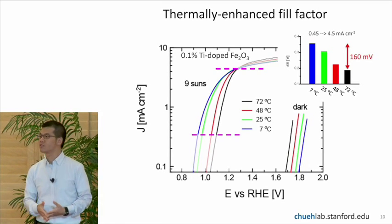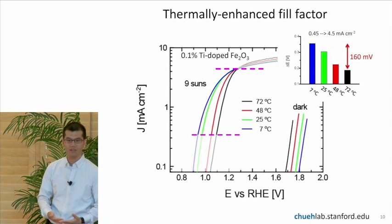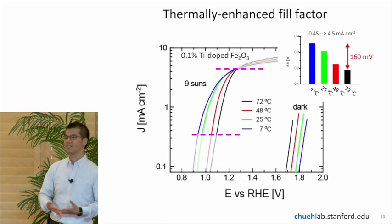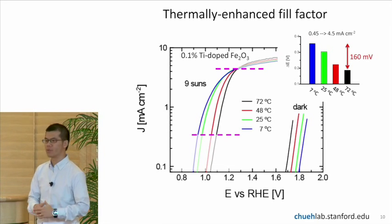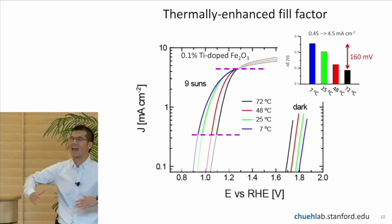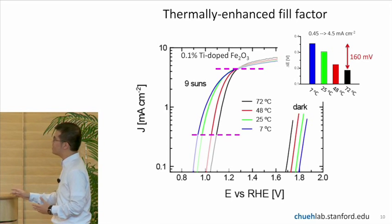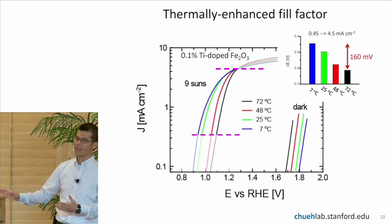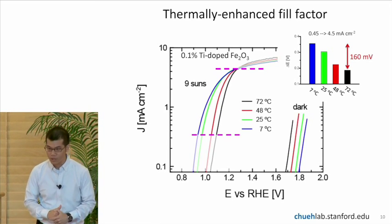For those familiar with solar cells, one of the key characteristics of solar cell is the so-called fill factor. The fill factor basically tells you how fast your voltage increases with potential. Ideally, we want something kind of like a square rather than a slanted line on this curve. And what I'd like to point out to you is the current actually rises much faster with potential when you increase the temperature.